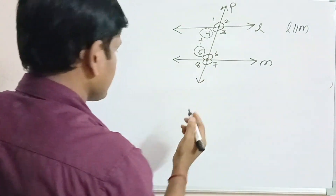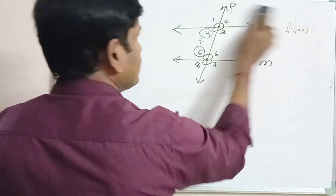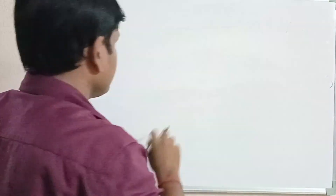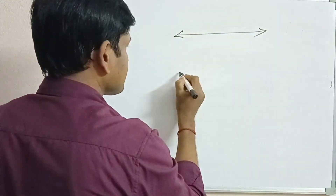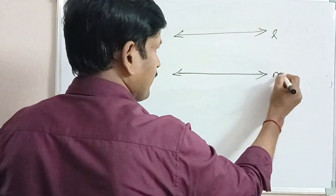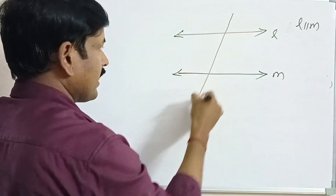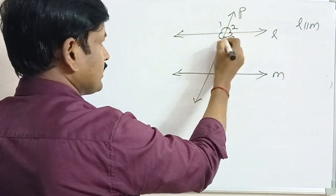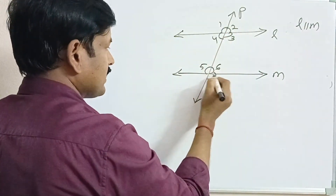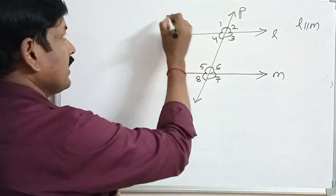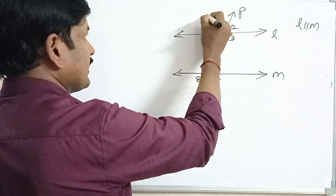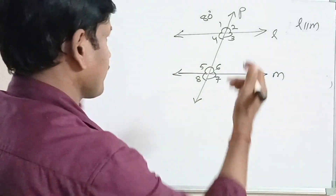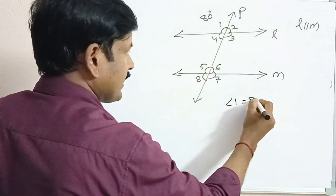Let us observe another example. Here, lines L and M are parallel lines and P is a transversal. The angles formed are angle 1 through angle 8. Let angle 1 = 80 degrees. Find all other angles. Here, angle 1 is equal to 80 degrees.